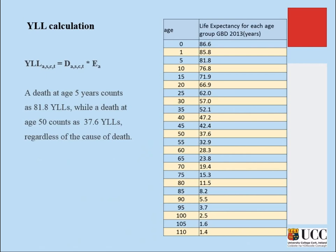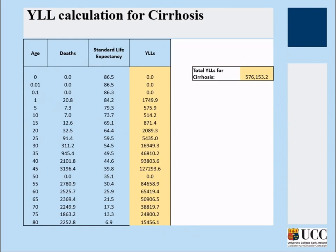Years of Life Lost to premature mortality: if you die at age 0, you have lost 86.6 years of life. If you die at age 5, you lose 81.8 years. If you die at 100, you lose only 1.4 years. YLL is calculated as the number of deaths at a particular age multiplied by the standard life expectancy at that age. The total years of life lost for cirrhosis is the summation across all age groups of deaths multiplied by standard life expectancy.